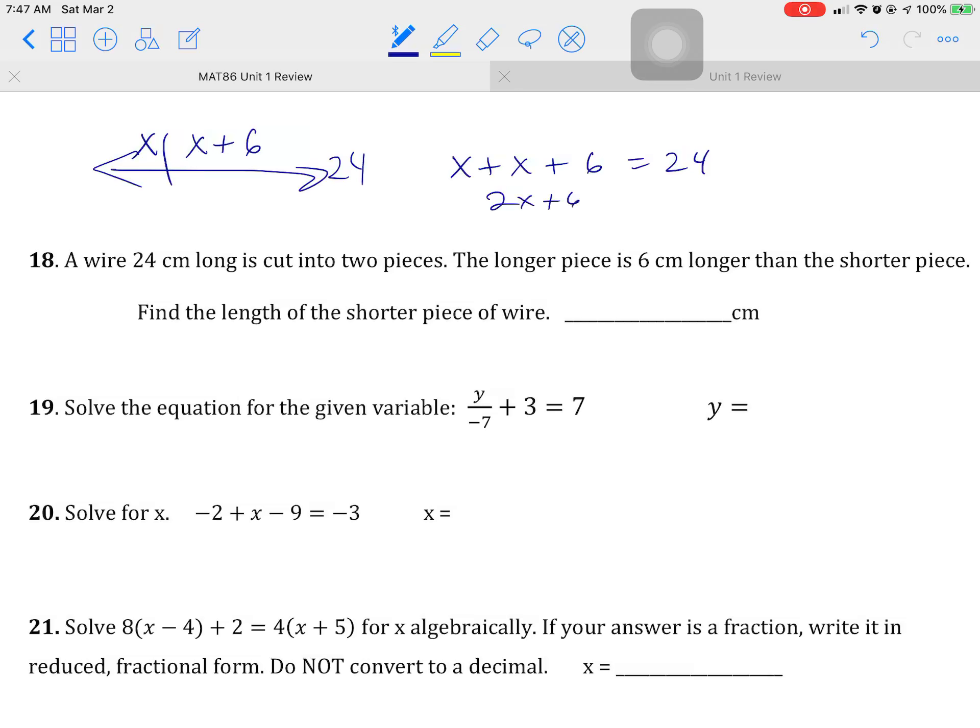Combine like terms. I like to go back and check. If X is 9, so 9 plus 6 is 15. 15 and 9 are 24. So we're good. So what does it want? It wants the length of the shorter piece, which is 9 centimeters.